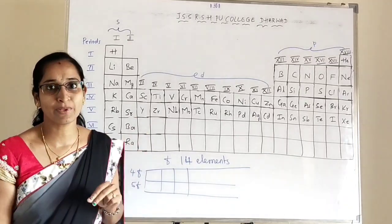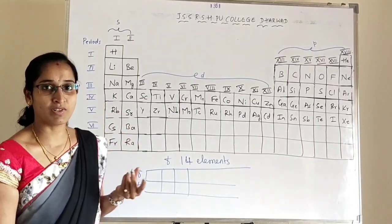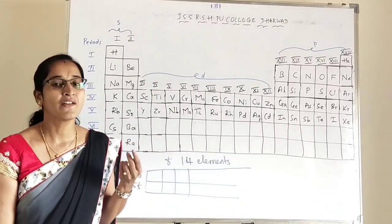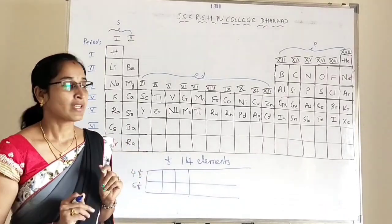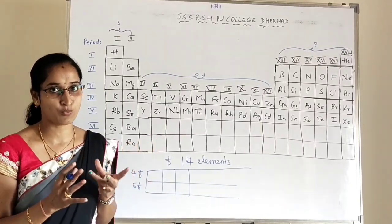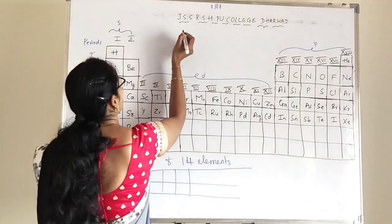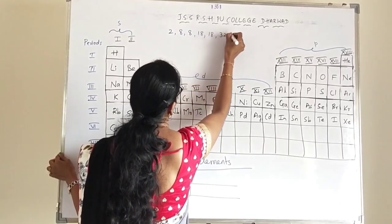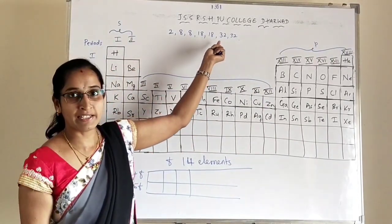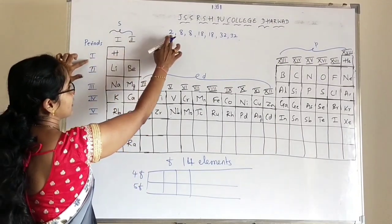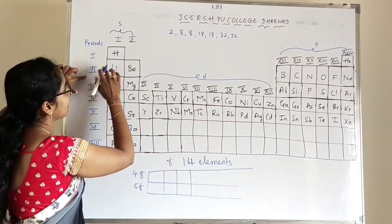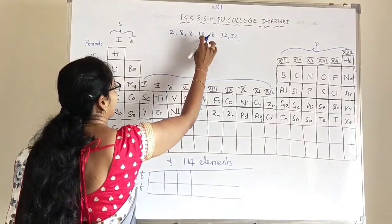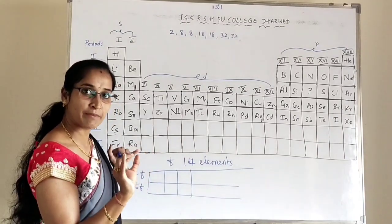Now let's start with the tricks for remembering atomic numbers. The number of elements in each period is: 2, 8, 8, 18, 18, 32, and 32. So the first period has 2 elements — hydrogen and helium. The second period has 8 elements, and similarly for the other periods. These numbers of elements per period are the key to finding atomic numbers.